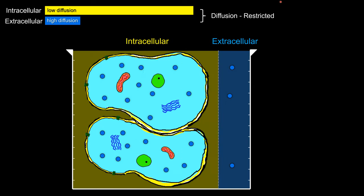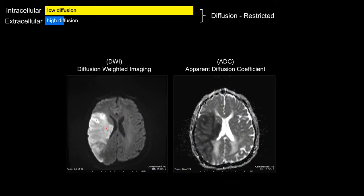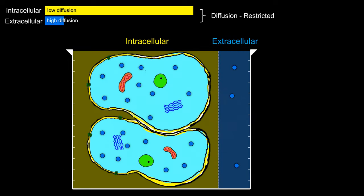As the cell begins to swell up, it crowds out the water in the extracellular compartment, so even the extracellular water becomes more restricted compared to adjacent normal tissue. At this point, the sample experiences maximum restricted diffusion — what we see on imaging as very bright on DWI and dark on ADC.